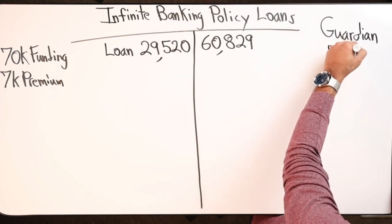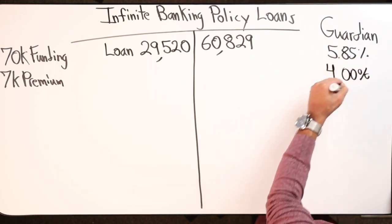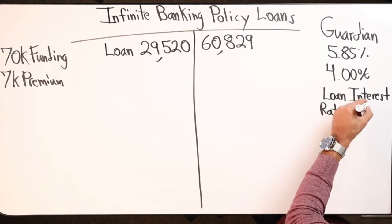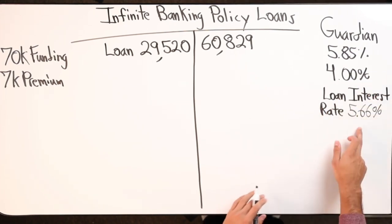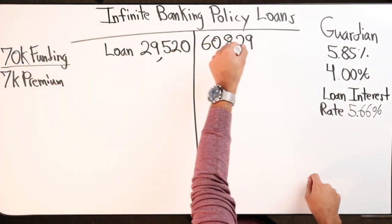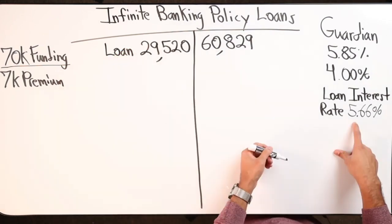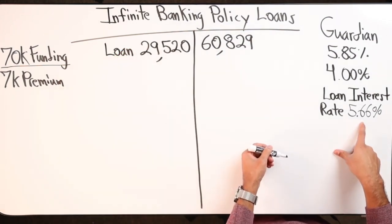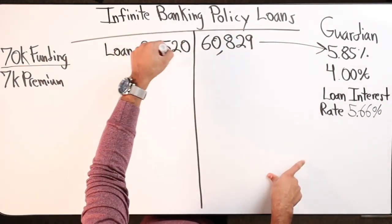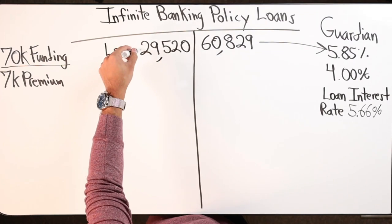So just under $61,000. This is a Guardian policy. Their dividend rate right now is 5.85%, their guarantee is 4%, and my current loan interest rate is 5.66%. That's the total amount I put in for the first year, what showed up in cash, what I have outstanding in loans - my loan interest rate is 5.66%.